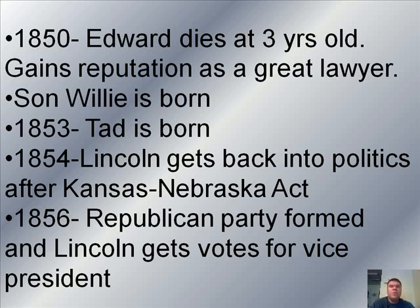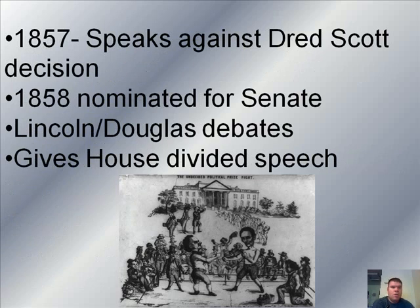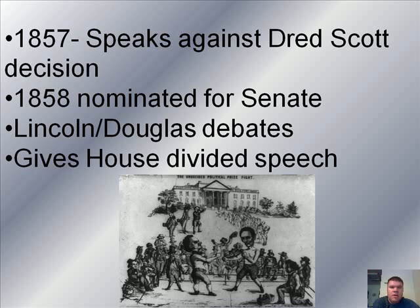In 1856, a new party is formed called the Republican Party, and Lincoln actually gets some votes for vice president that year. He's offered to be the territorial governor of Oregon, but he turns that down to continue his law practice in Illinois. In 1857, he speaks out against the Dred Scott decision — a Supreme Court decision that said that a slave named Dred Scott could not be considered a citizen, and therefore couldn't sue his owner for his freedom. That's a big decision, and Abraham Lincoln speaks out against it.